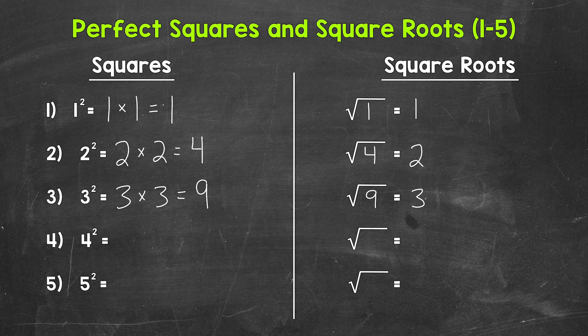Let's move on to number 4, where we have 4 squared. 4 squared means 4 times 4. 4 times 4 equals 16, so 4 squared equals 16. That means that the square root of 16 equals 4.